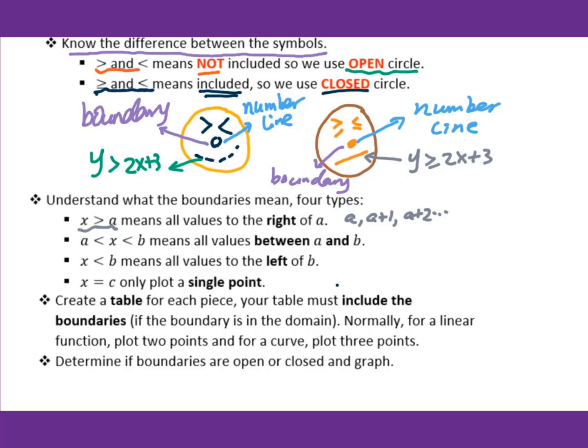x greater than a and less than b means all values between a and b. x less than b means all values to the left of b — when you set up the table, use b, b minus 1, b minus 2, and keep going.